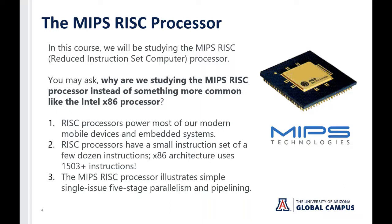Finally, the MIPS RISC processor illustrates simple, single-issue, five-stage parallelism and pipelining, which we will discuss in detail further on in the course. Pipelining is essential to modern processors. Many modern processors are also multi-core, with multiple processors running simultaneously within one chip. But pipelining is a fundamental concept that has made processors more efficient, and the simplicity of the MIPS processor lets us illustrate that in a tangible, easy-to-understand way.